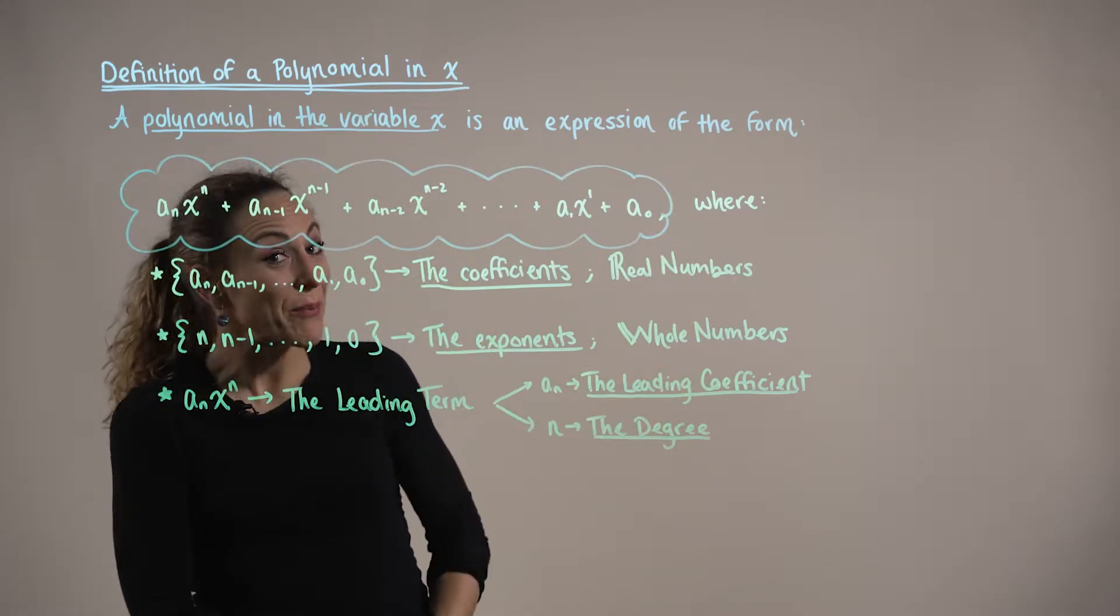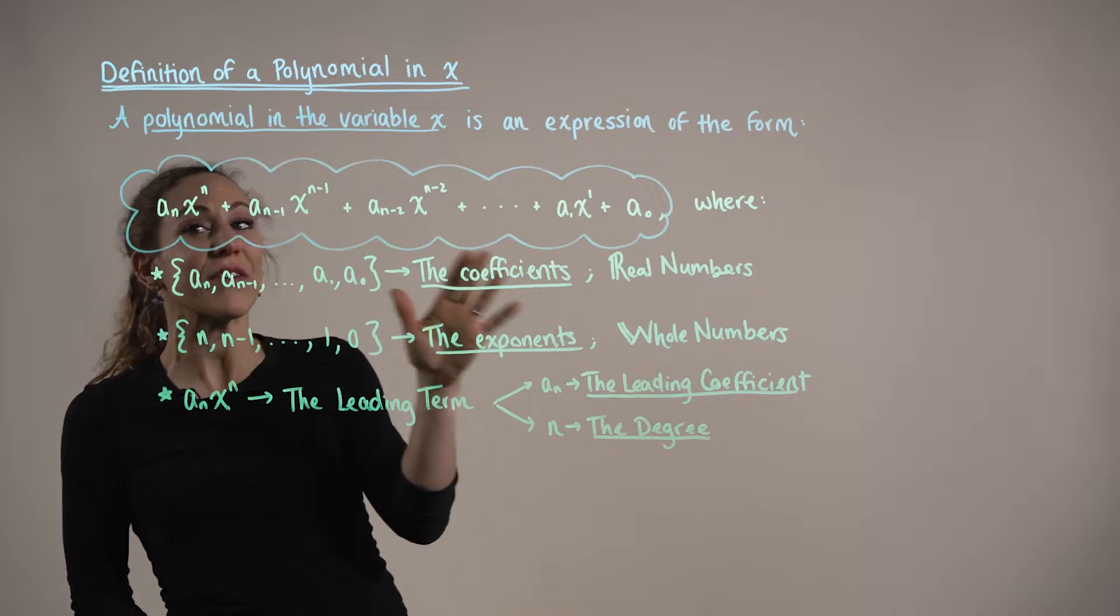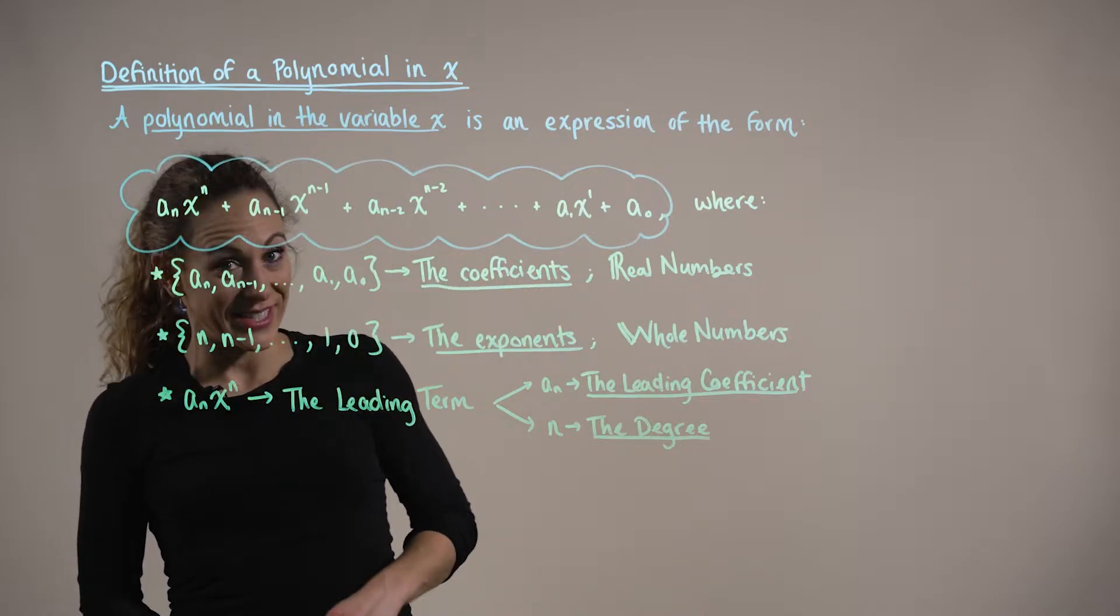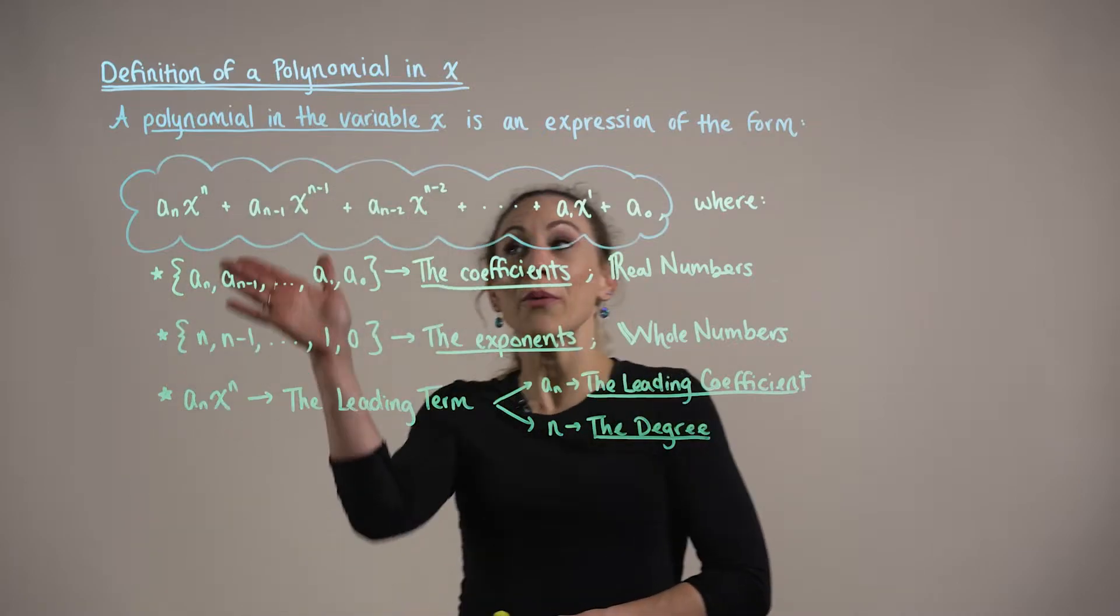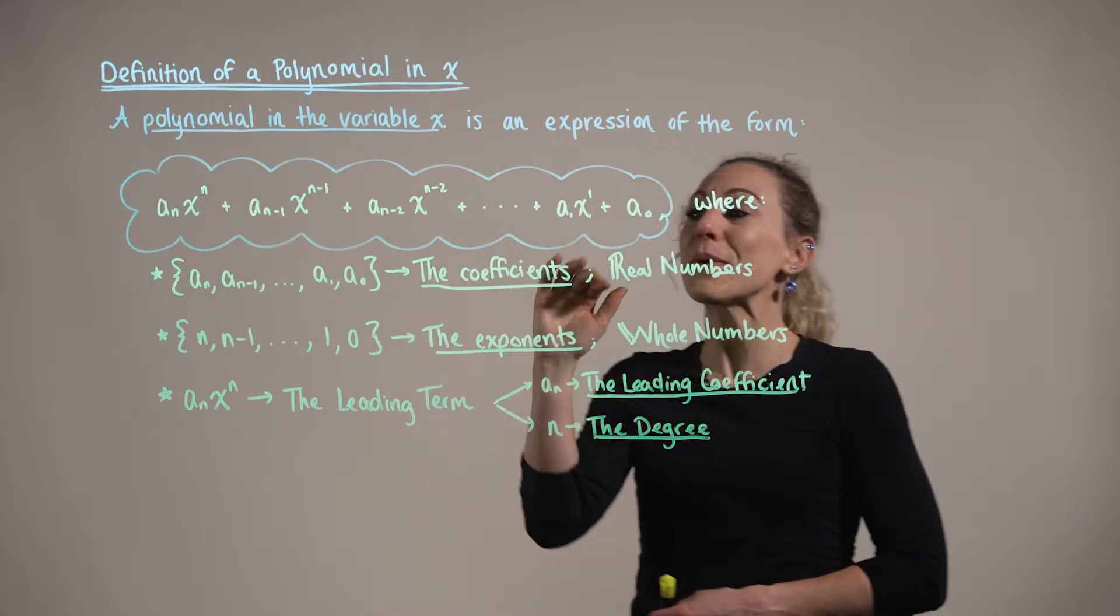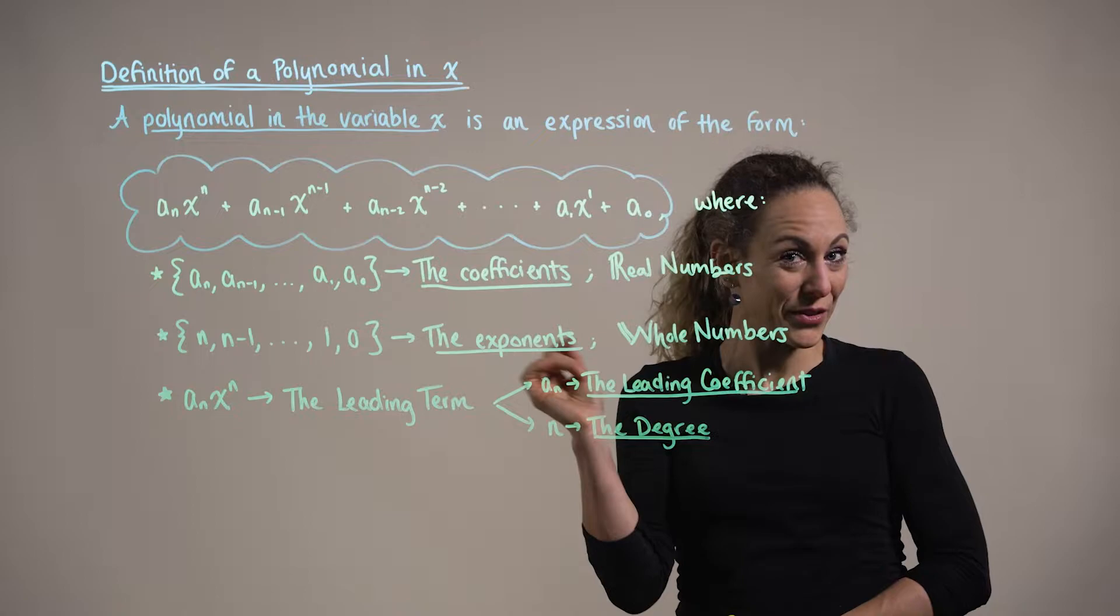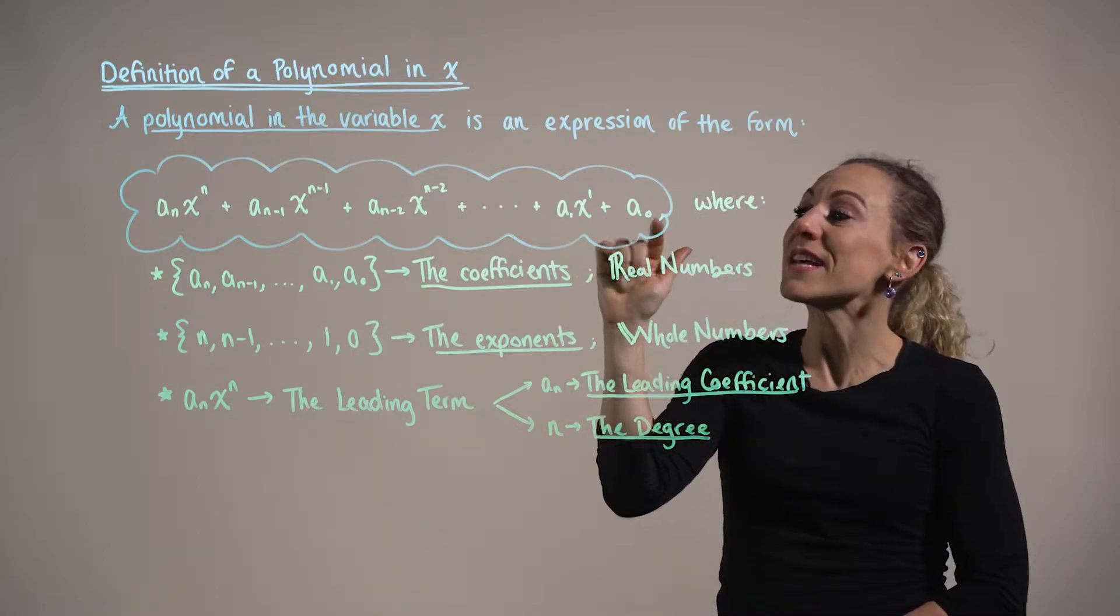A polynomial in the variable x is an expression of the form a sub n times x to the n plus a sub n minus one times x to the n minus one. We continue with this pattern all the way down until we get to a sub one times x to the first power plus a sub zero.